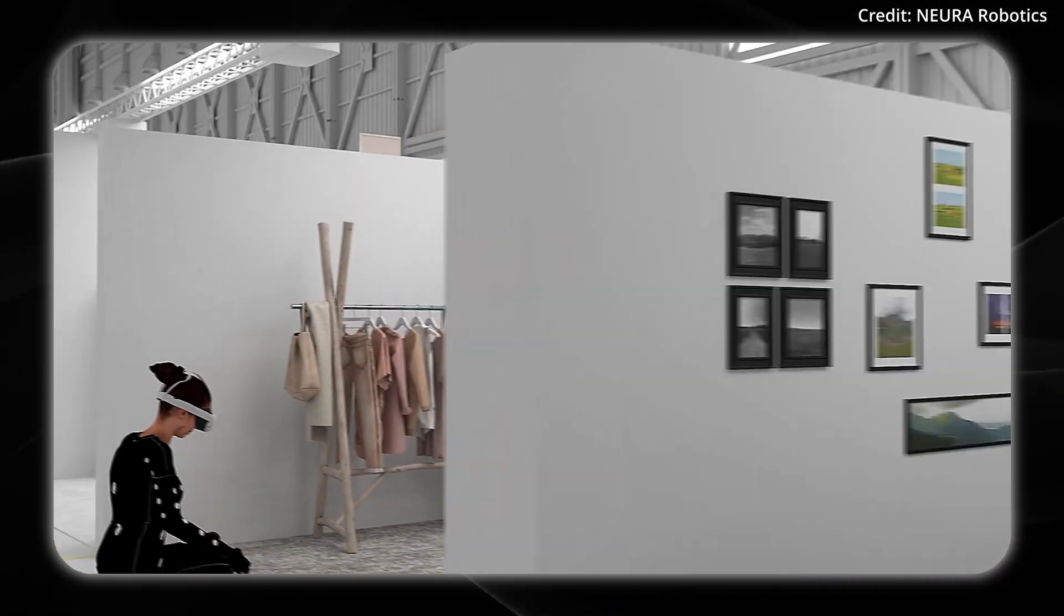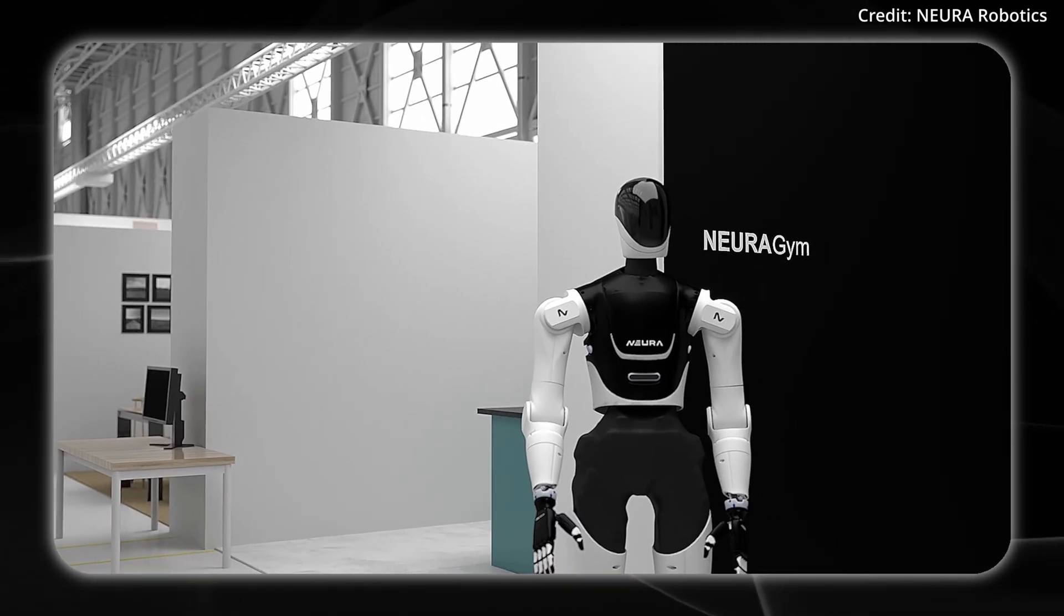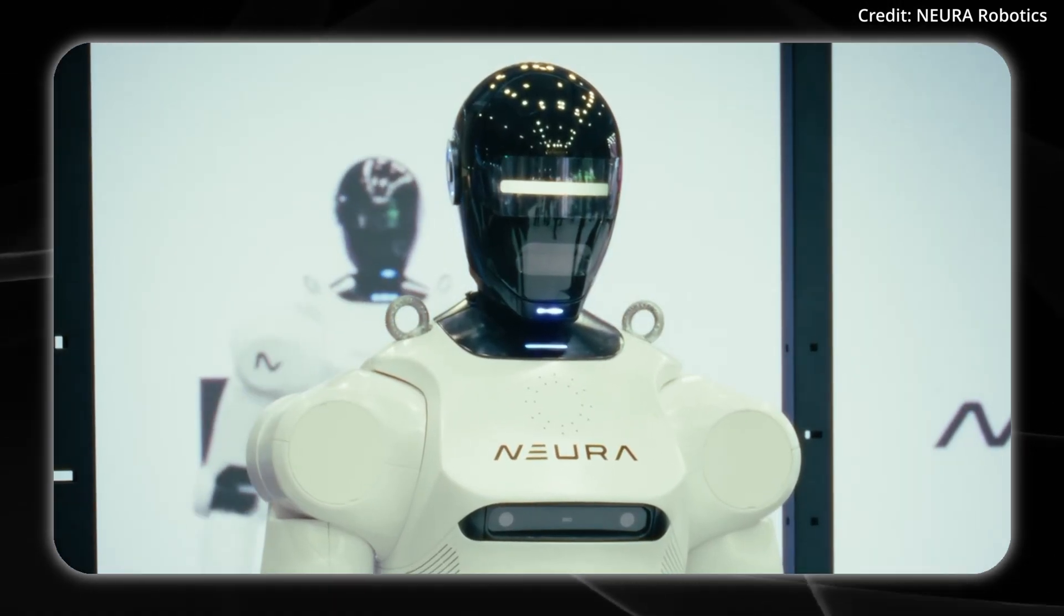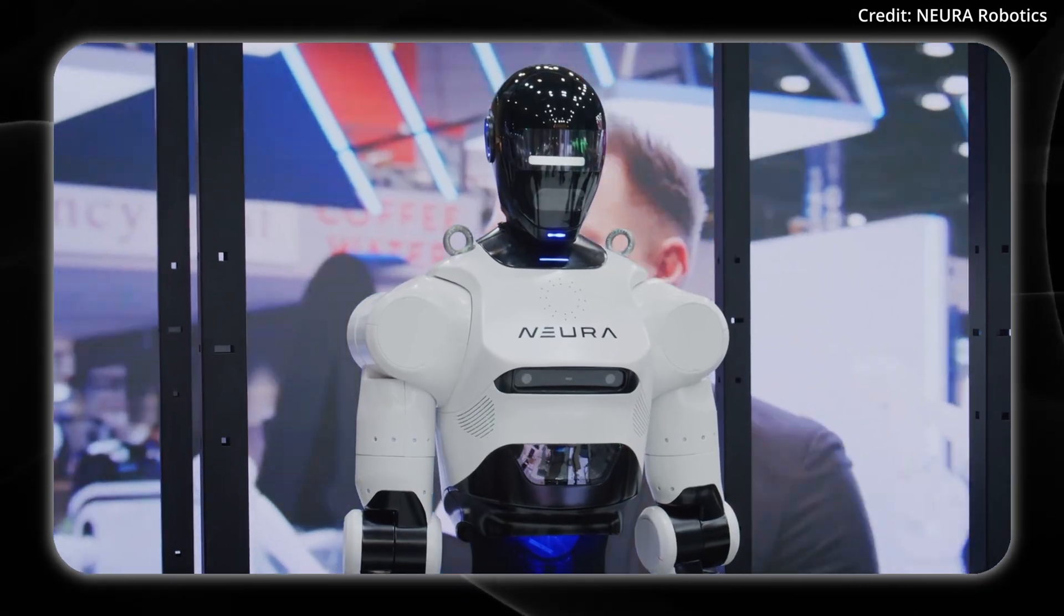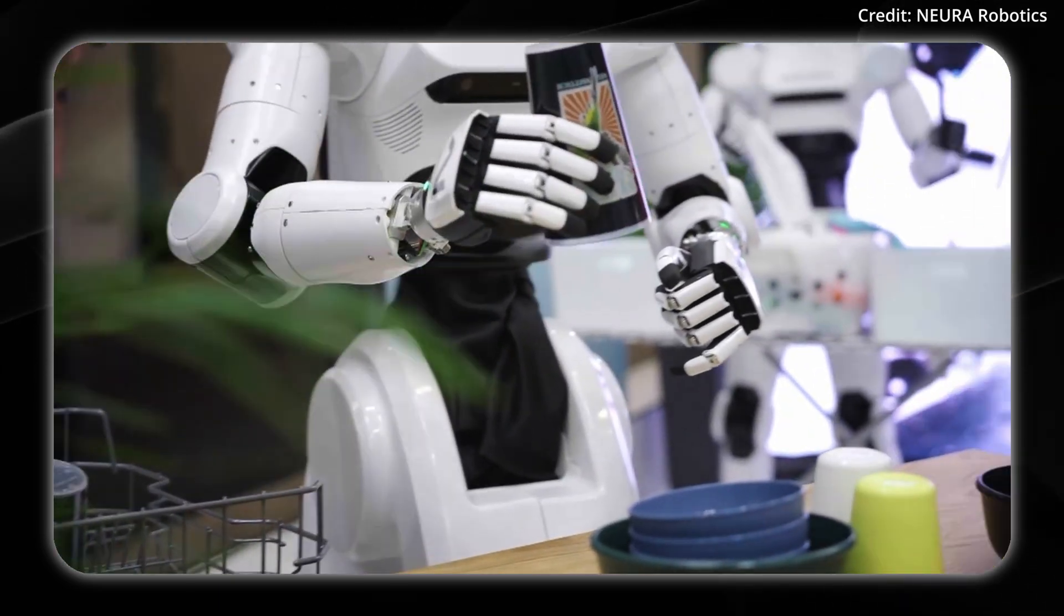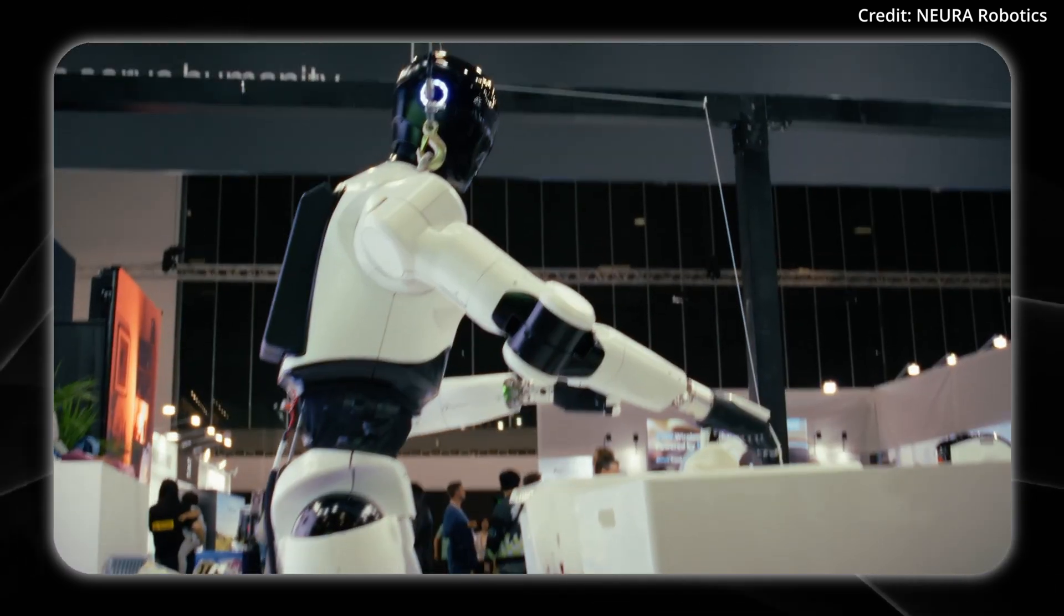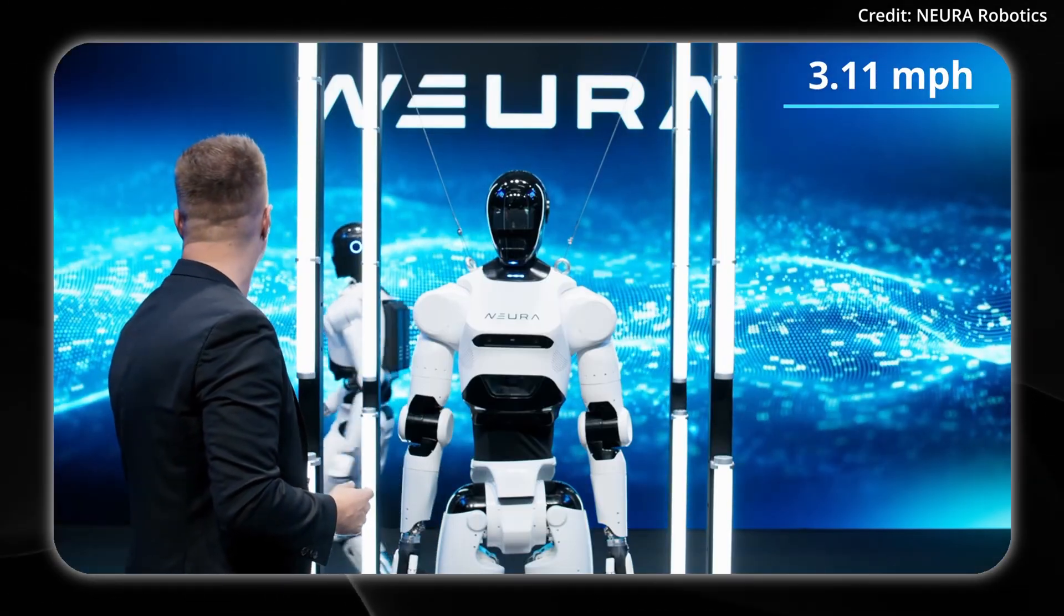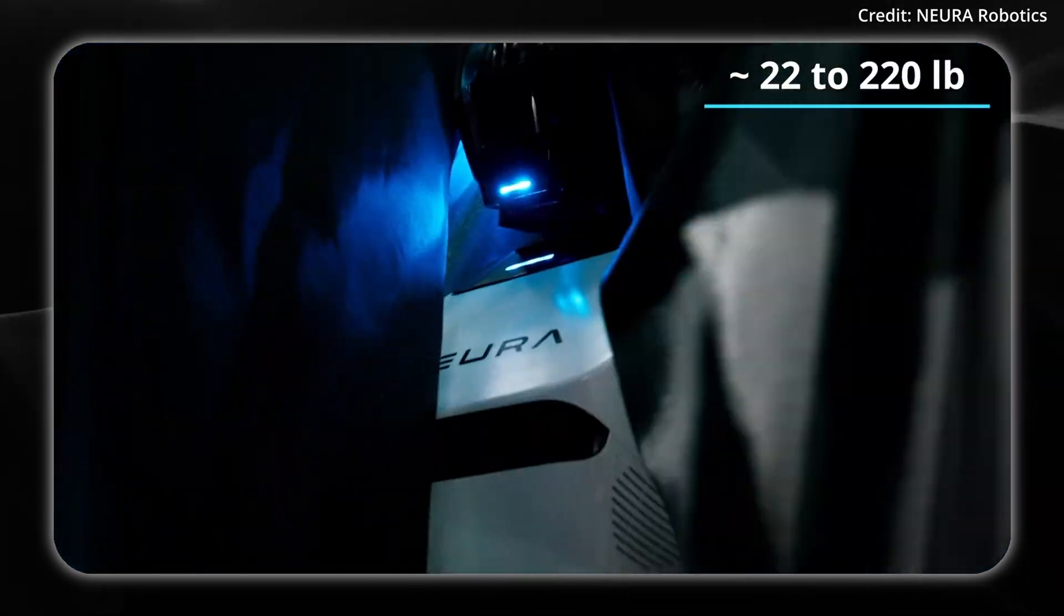This is why Neuro Robotics has already shifted their focus from operating a single facility to scaling the concept across multiple global locations. But the company also just announced several upgrades to its 4NE1 humanoid. The robot is now designed for both industrial and domestic environments, and it features full-body sensor skin and 360-degree perception. It stands 180 centimeters tall and weighs 80 kilograms, allowing 4NE1 to walk up to 5 kilometers per hour while handling payloads between 10 and 100 kilograms.